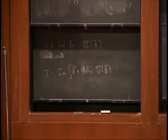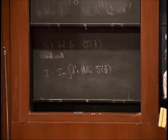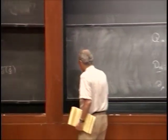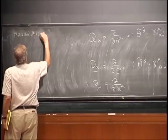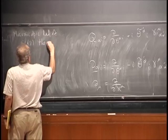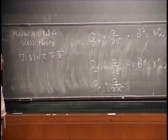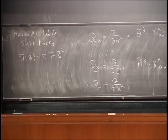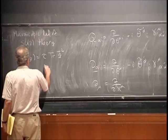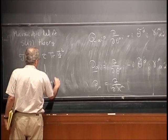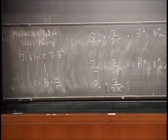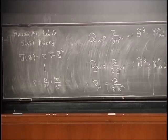This is a general way to construct N=2 supersymmetric theories — you've also heard about this from John Bagger. For the microscopic SU(2) theory, we take F(Phi) = tau times Tr(phi²), taking the trace because phi is in the adjoint representation to ensure gauge invariance, multiplied by the complex parameter tau. After performing the d^4x d^4theta integral, we recover the Lagrangian described earlier. This is our third construction of the theory.